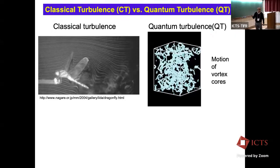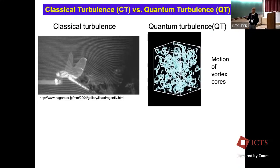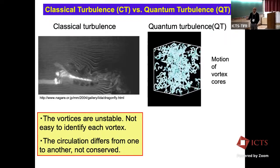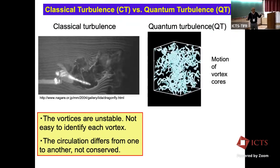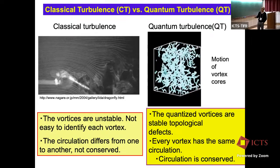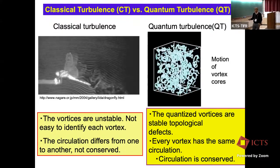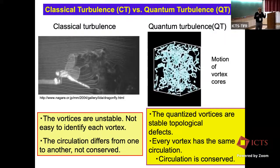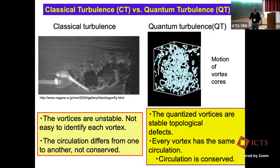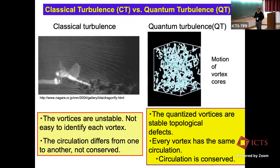Here we compare classical turbulence and quantum turbulence. In classical turbulence, vortices are unstable and it is not easy to identify each vortex. The circulation differs from one to another and is not conserved. However, in quantum turbulence, quantized vortices are stable topological defects, every vortex has exactly the same circulation, and the circulation is conserved. So if the elements of turbulence are vortices or eddies, they are better defined in quantum turbulence than in classical turbulence. This is one important advantage of studying quantum turbulence.